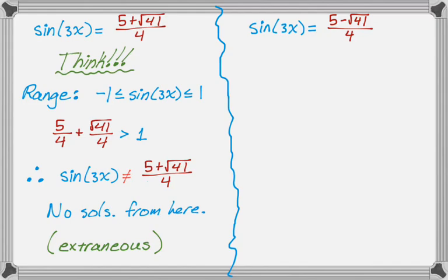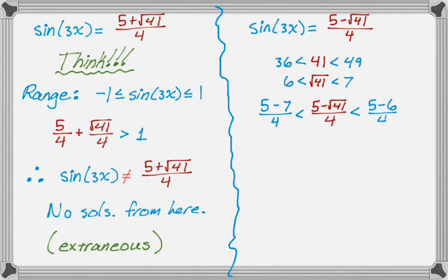So now we have to deal with this radical 41 to figure out what's really happening. So what I typically do is I take the two perfect squares that are on either side of it. So it's definitely bigger than 36, which is a perfect square, and less than 49, which is a perfect square. Which means if I square root across the board, I get 6 is less than radical 41 is less than 7. So I can use those to create a bound for this thing. So if I do 5 minus 7 over 4, that's definitely going to be less than 5 minus radical 41 over 4, which is in turn less than 5 minus 6 over 4.